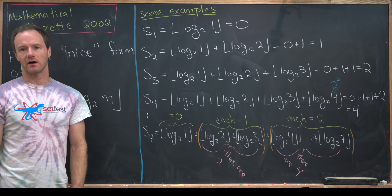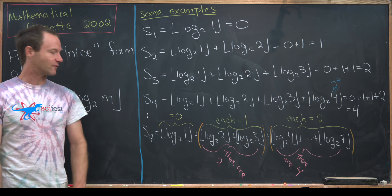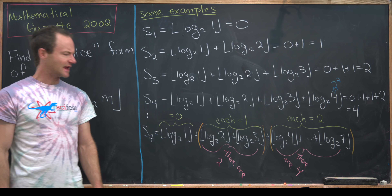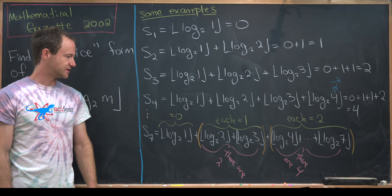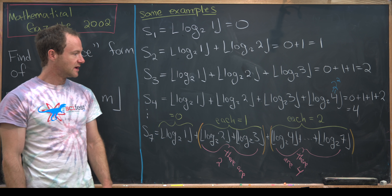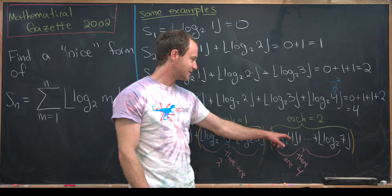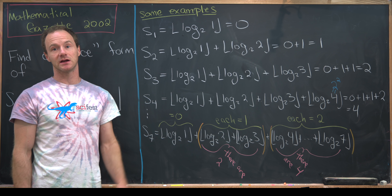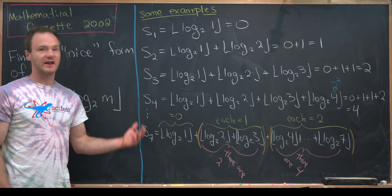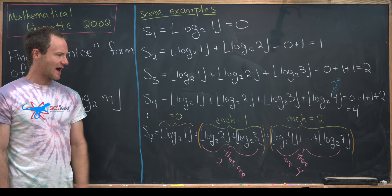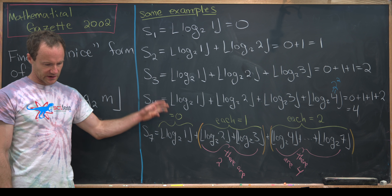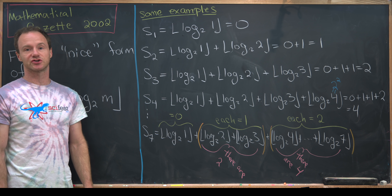I've written out the seventh sum to see what's going on. We've got one term equal to 0, two terms equal to 1 because they lie between 2¹ and 2², and exactly four terms equal to 2 because they lie between 2² and 2³. If we were to include another term, it would have a value of 3 after taking the logarithm and floor. This pattern extends as you go on and on.